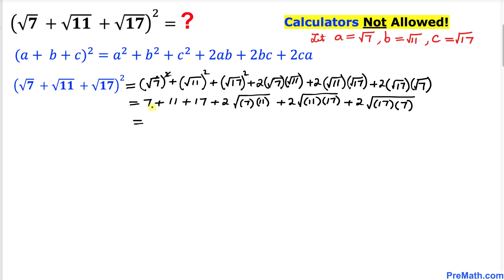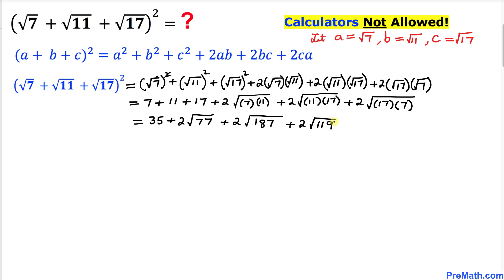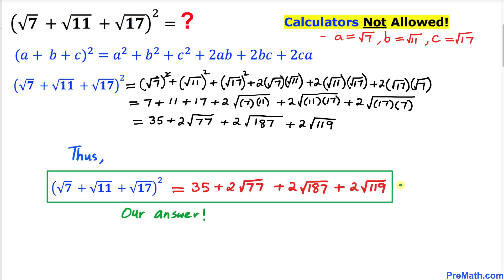Now let's take care of the like terms. This gives us 35, plus 2 times square root of 77, plus 2 times square root of 187, plus 2 times square root of 119. We can see that all of these terms are unlike terms, so that is our final answer.